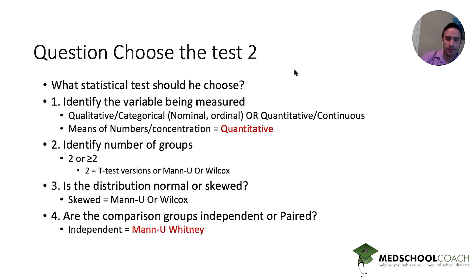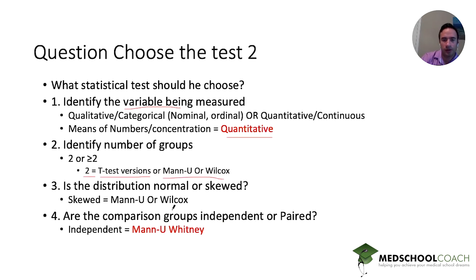Same breakdown: identify the variable — is it qualitative/categorical (nominal, ordinal) or quantitative/continuous? This was quantitative. We had two groups, pointing to t-test, Mann-Whitney U, or Wilcoxon. We knew the data was skewed, narrowing to Mann-Whitney U or Wilcoxon. And we knew these were independent groups, pointing to Mann-Whitney U.